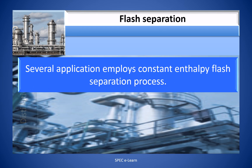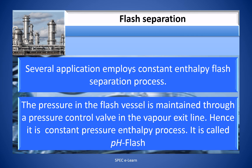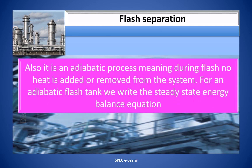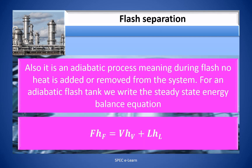Several applications employ a constant enthalpy flash separation process. The pressure in the flash vessel is maintained through a pressure control valve in the vapor exit line; hence it is a constant pressure-enthalpy process, called PH flash. It is also an adiabatic process, meaning during flash no heat is added or removed from the system. For an adiabatic flash tank, we write the steady-state energy balance as: F × HF = V × HV + L × HL.